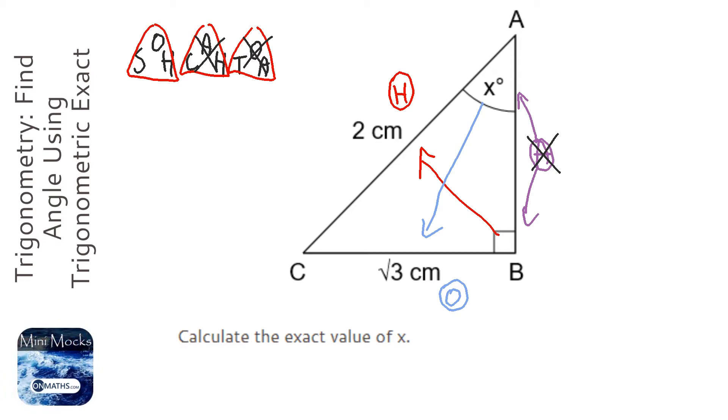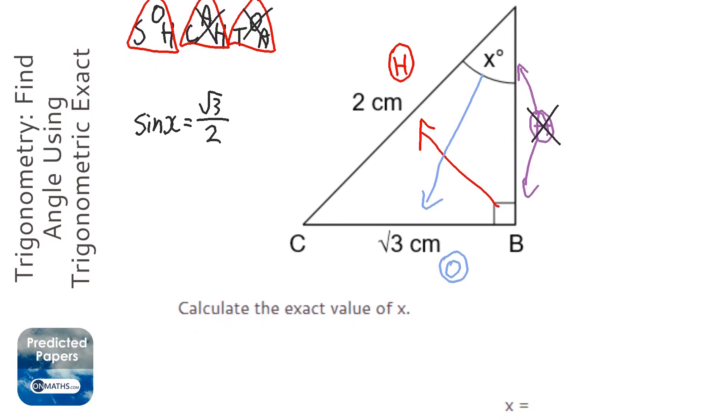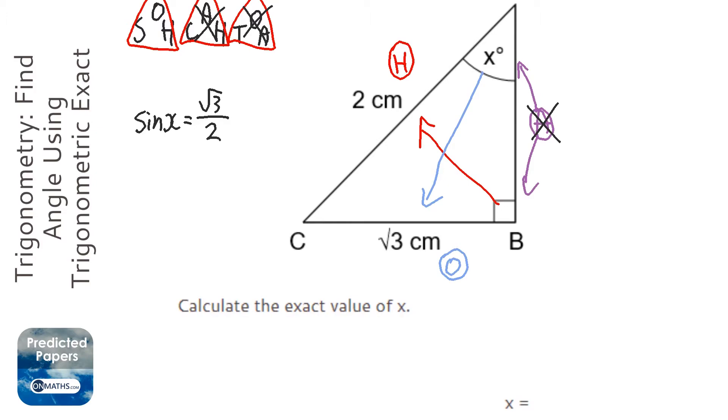So we're looking at SO. This little triangle says that sine of the angle equals the opposite, which is root 3, over the hypotenuse, which is 2. So basically I need to know what value of sine gives me root 3 over 2. Now there's a method I've shared in a previous video, which I'm just going to briefly go through.